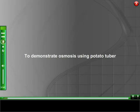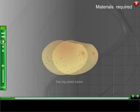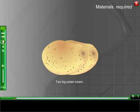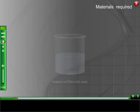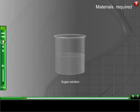To demonstrate osmosis using potato tuber, materials required: two big potato tubers, beakers half filled with water, pins, knife, sugar solution, water.